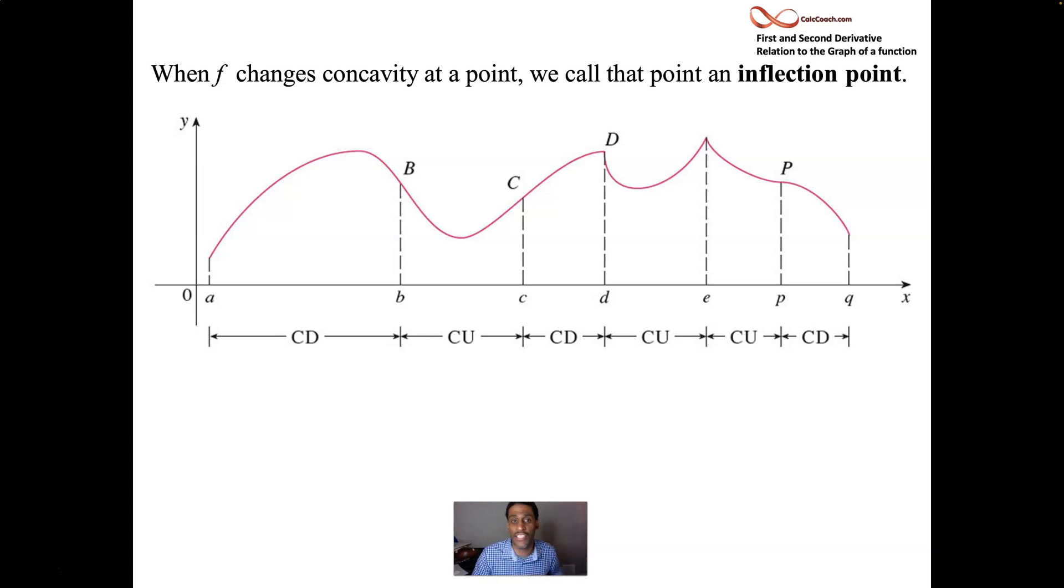So where are your inflection points? Where did you change concavity? Technically, D is the place where you change concavity at. So B, C, D, and P are places where you change concavity at. D is a place where your derivative doesn't exist at. But that's okay. You change concavity there. Officially then, it's an inflection point.